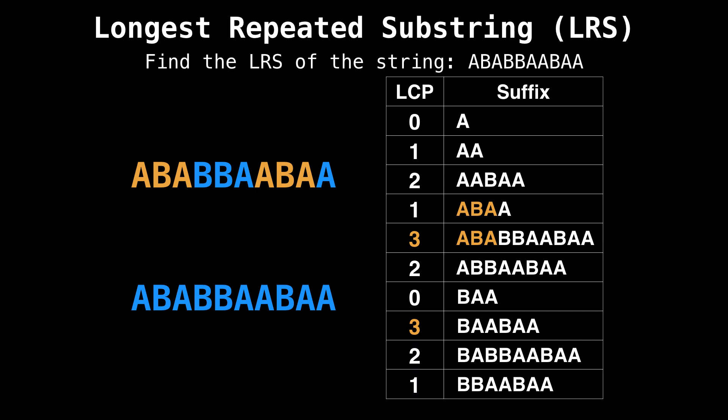The other repeated substring is found using the second largest common prefix value. Its first occurrence is found here, and the second one just next to it.